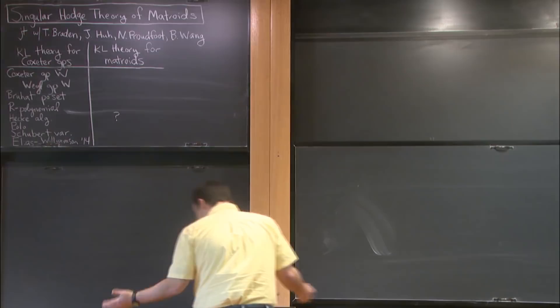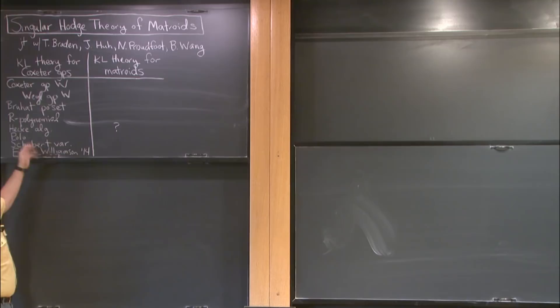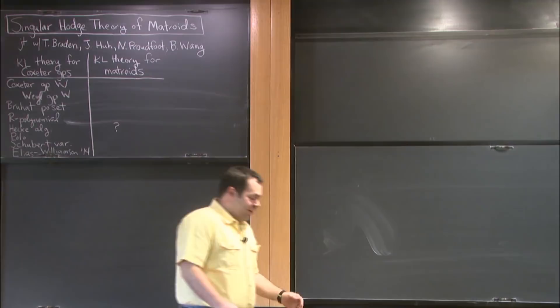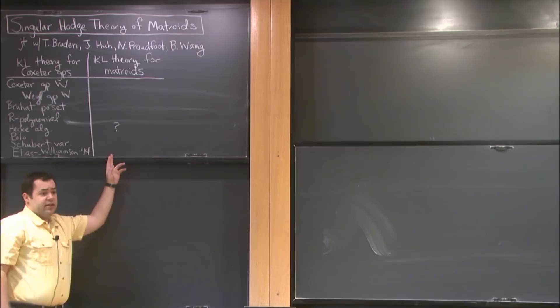I don't consider myself an algebraic geometer, so there may be questions that I just don't know. The first part of the talk is going to be basically a lightning review of the left-hand column. If you haven't seen the left-hand column before, that's fine — you can ignore the first five or ten minutes. If you have, you'll see analogies when I start on this side, which I'll start from scratch.